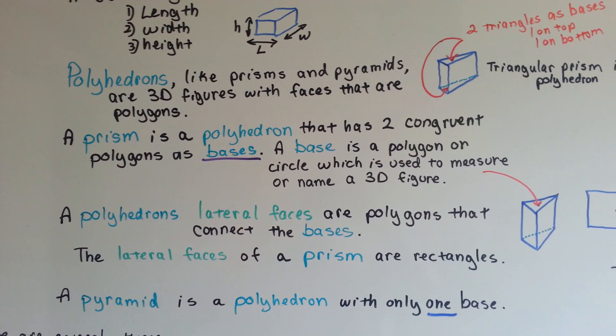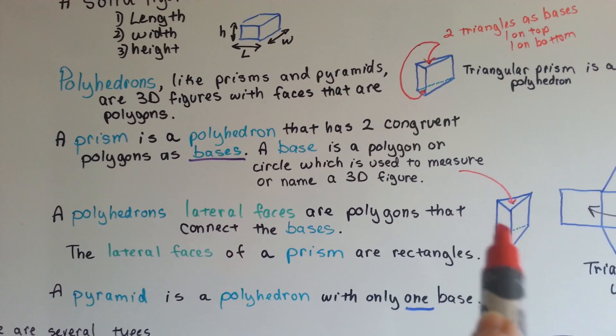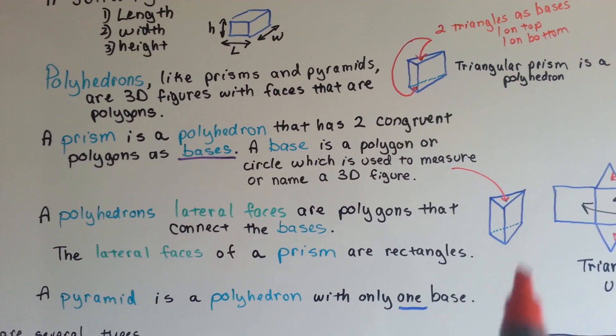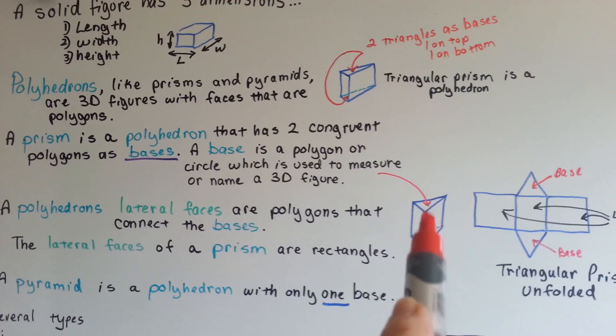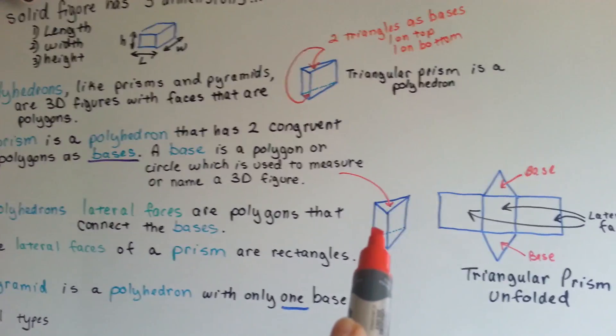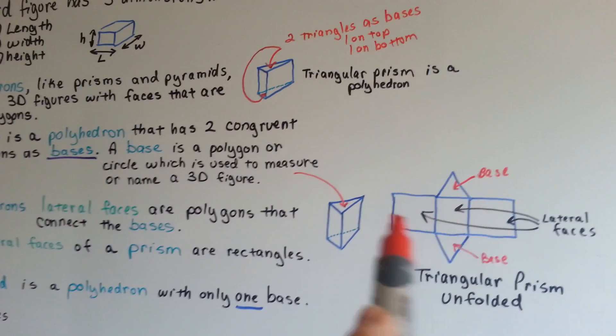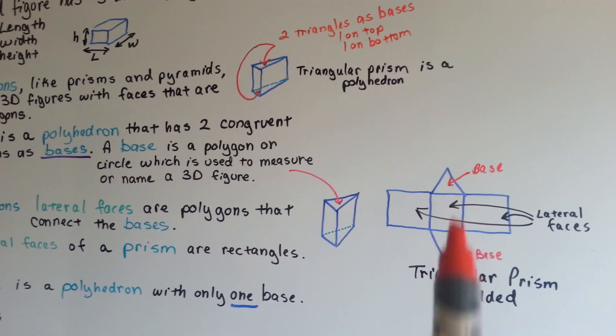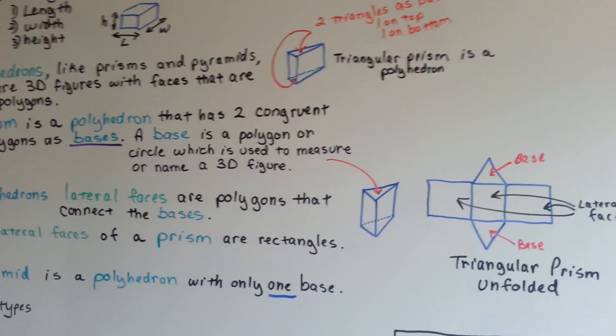The lateral faces of a prism are rectangles. All these lateral sides here are rectangles. If you were to open this triangular prism up, it would have a bunch of rectangles, and then the bases would be triangles. And then you could fold it back up again.